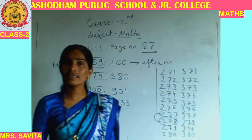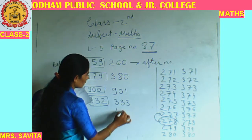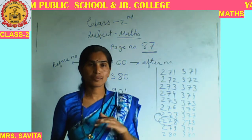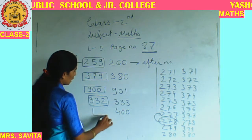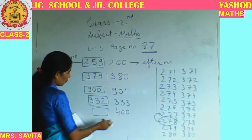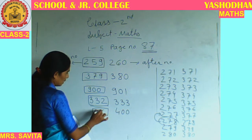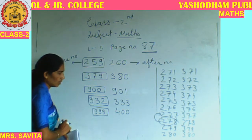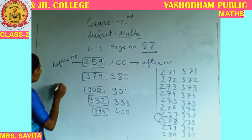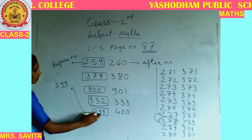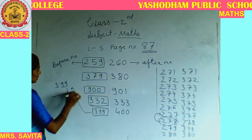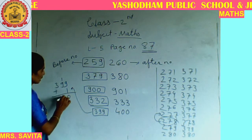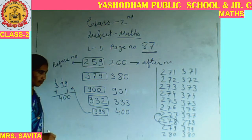Then 400. The before number of 400 is 399. Let me verify: 399 plus 1 — 9 plus 1 is 10, write 0 carry 1; 9 plus 1 is 10 again, write 0 carry 1; 3 plus 1 is 4. So we get 400. It means we got the correct answer — 399 before, then 400 will come.